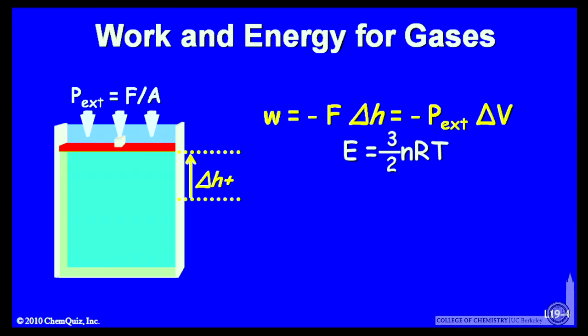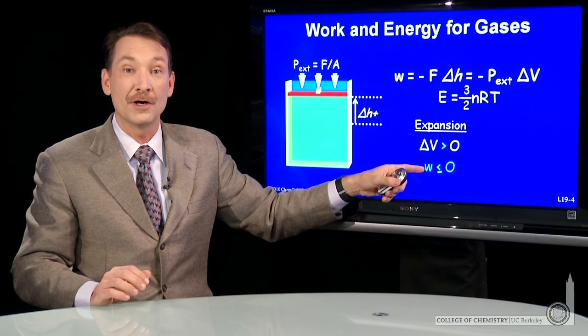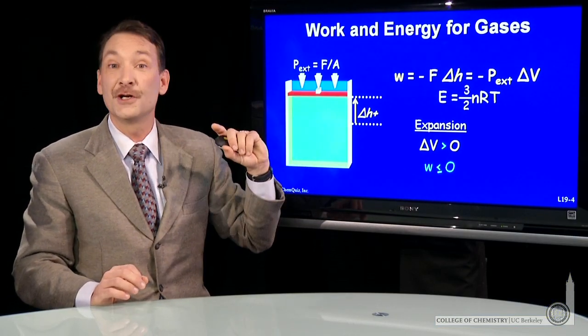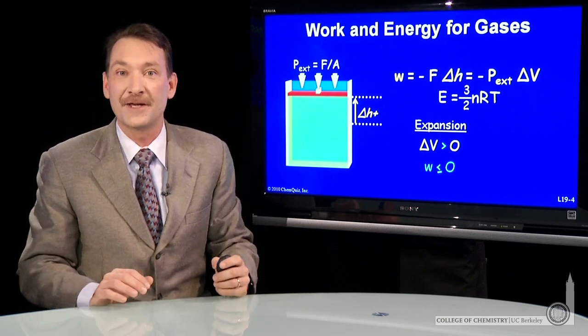So the energy of the system I'm going to track by its temperature. And when the volume changes for an expansion, positive ΔV will mean work is negative—the system doing the work—or zero. The work could be zero because there could be zero external pressure. I could expand for free against a vacuum.